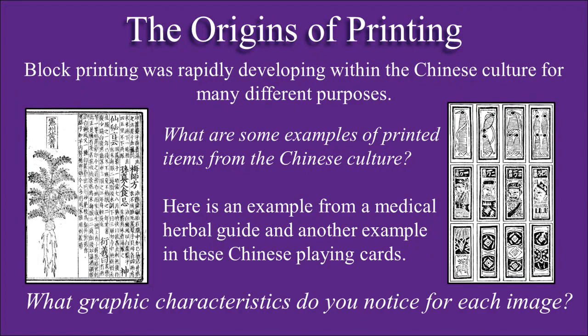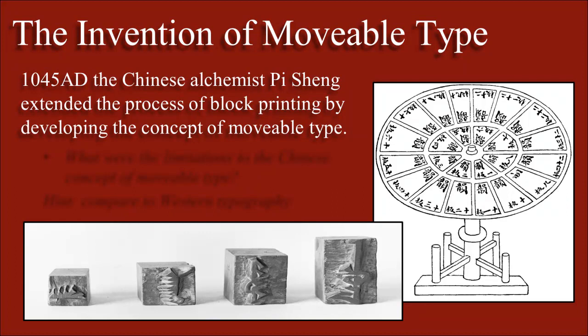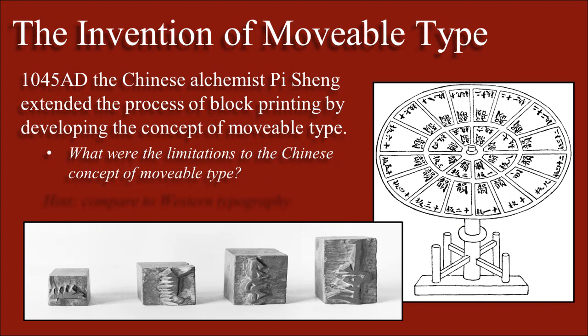The Chinese also invented movable type. Around 1045 AD, the Chinese alchemist Fai Sheng extended the process of block printing by developing the concept of movable type. I want you to list the limitations to the Chinese concept of movable type, and in order to do that you're going to have to contrast it to Western typography, as in the kind of typography that was invented by Johann Gutenberg.